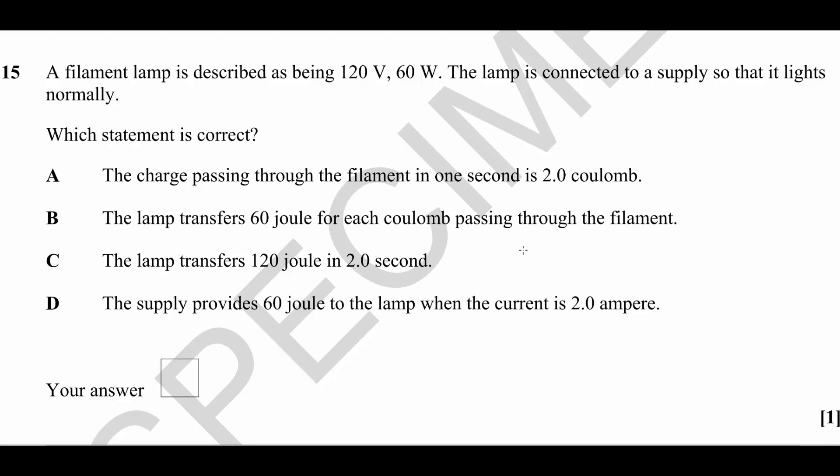Question number 15: We have a filament lamp which is 120 volts, 60 watts. The lamp is connected to a supply so that it lights normally. What this means is that it's designed to be used with a 120 volt supply, and when that happens it will draw a power of 60 watts.